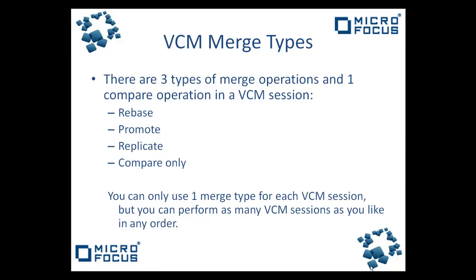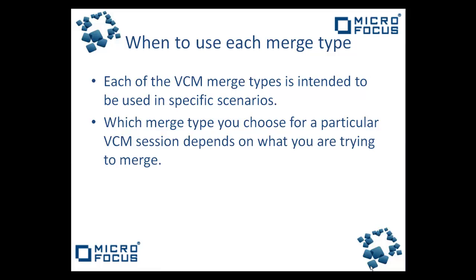There are three types of merge operations and one compare operation in a VCM session. You can only use one merge type for each VCM session, and you can perform as many VCM sessions as you like in any order. Each of the VCM merge types is intended to be used in specific scenarios, and which merge type you choose depends on what you are trying to merge.